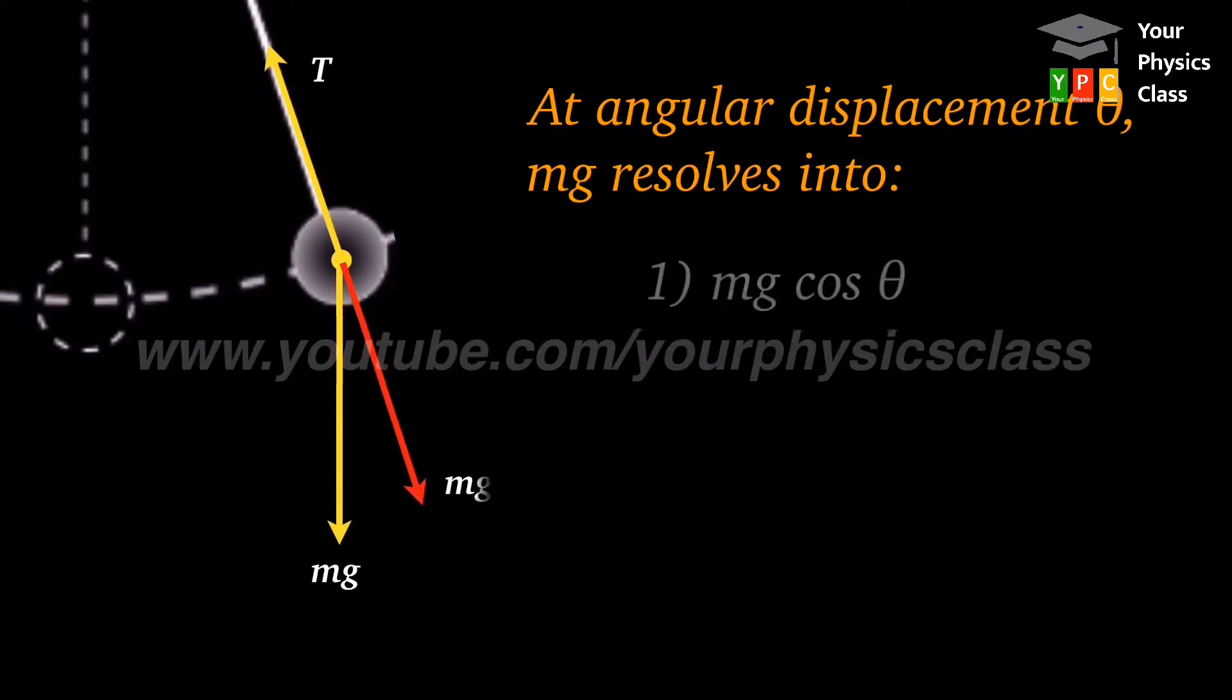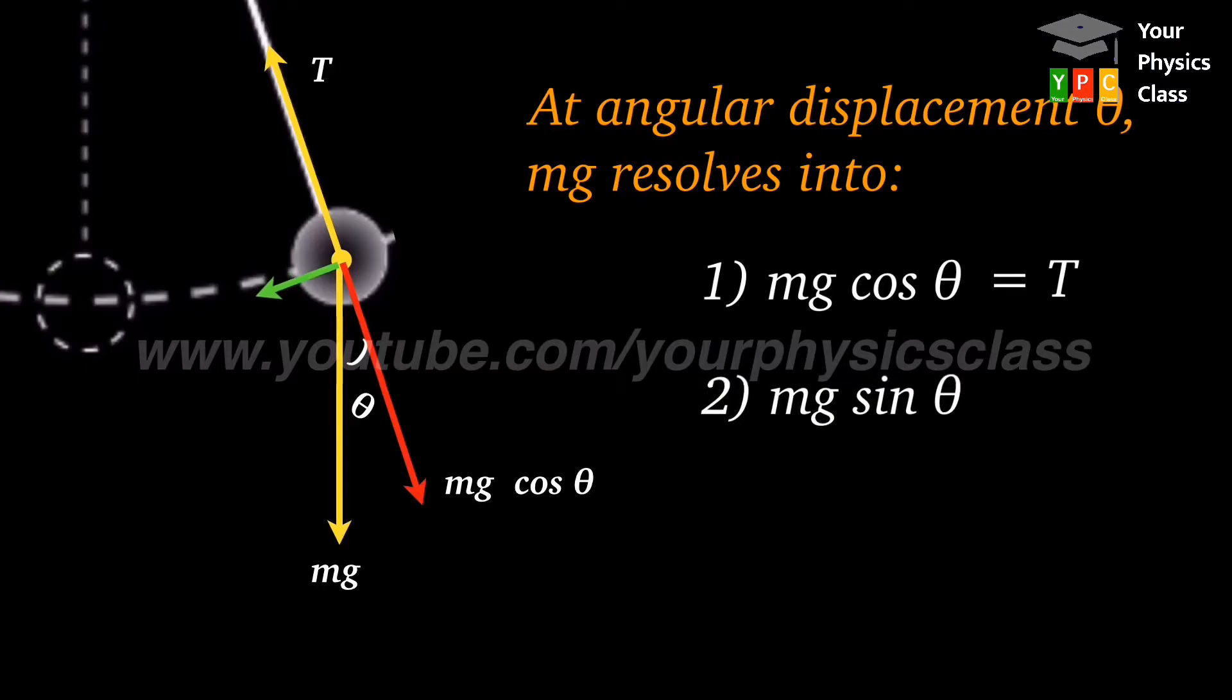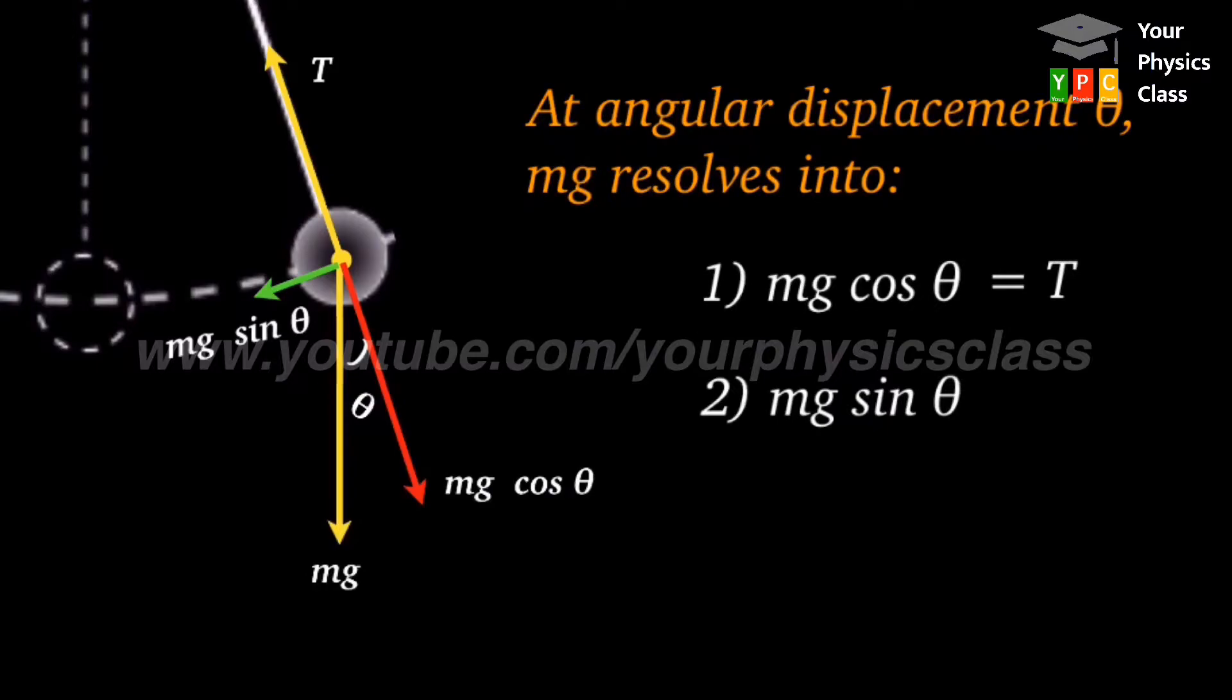Number one, mg cos theta which balances tension in the string. And second is mg sin theta which is unbalanced force. This unbalanced force provides restoring force.